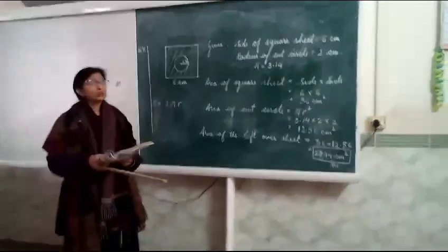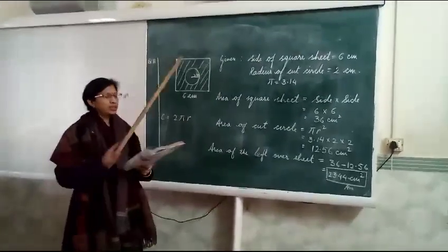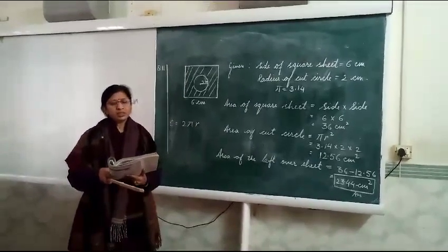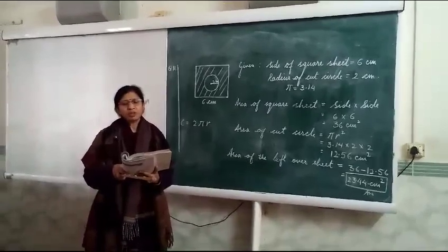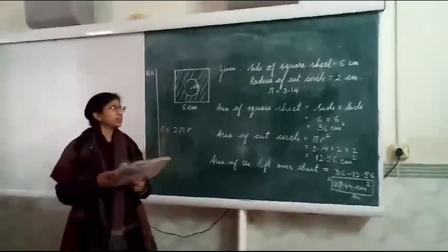Okay, now we come to question number 11. A circle of radius 2 cm is cut out from a square piece of aluminum sheet of size 6 cm.